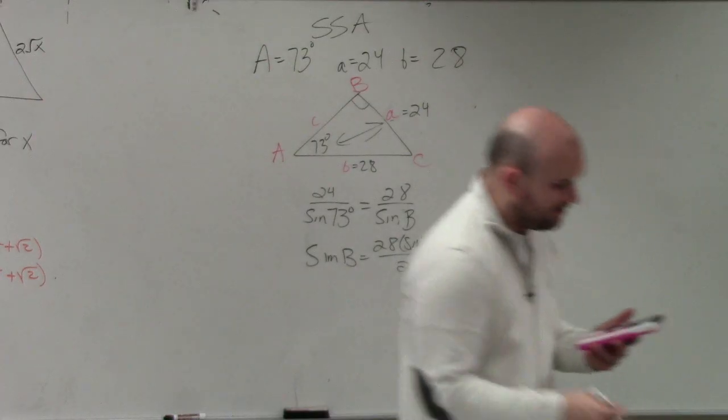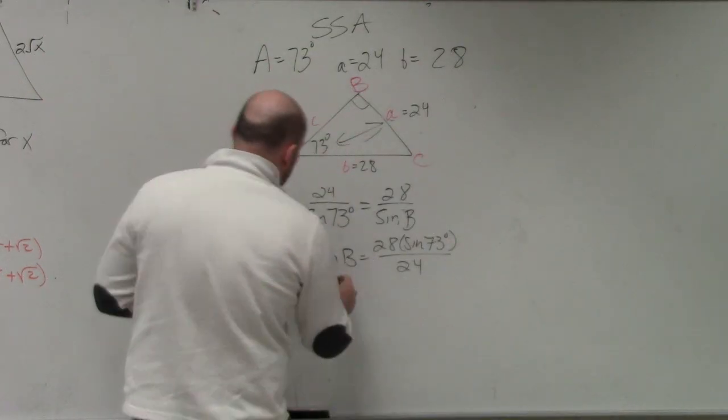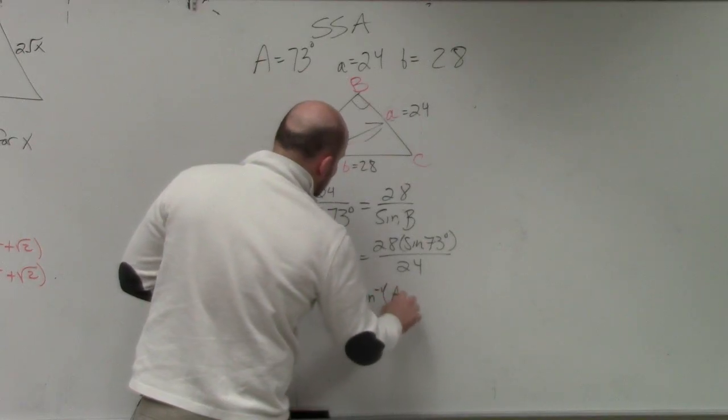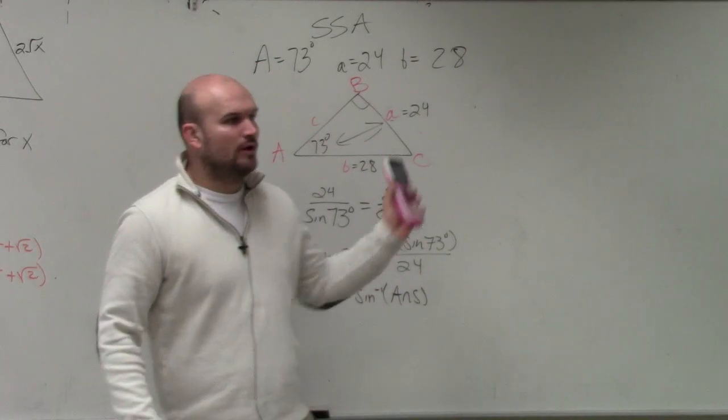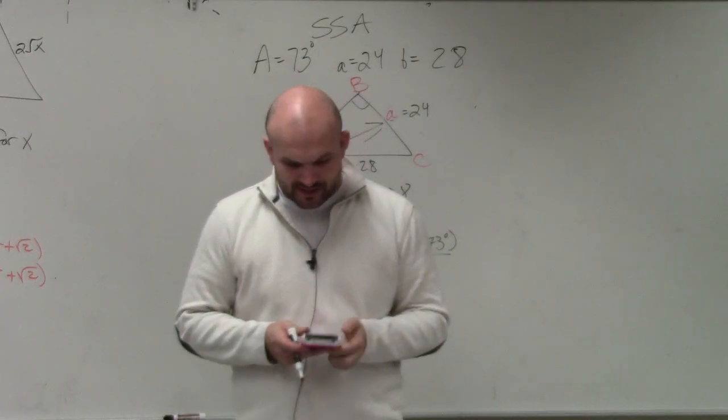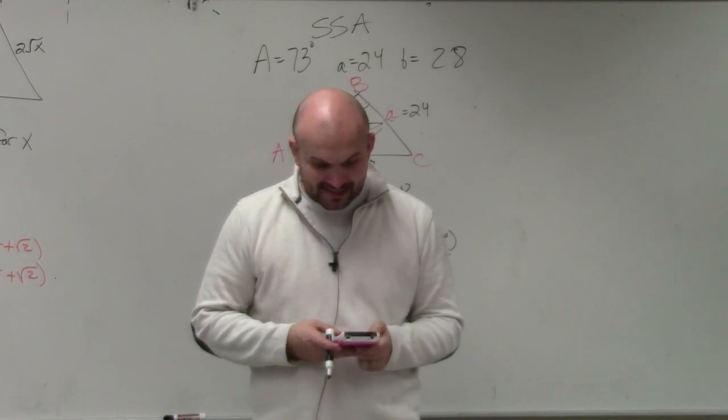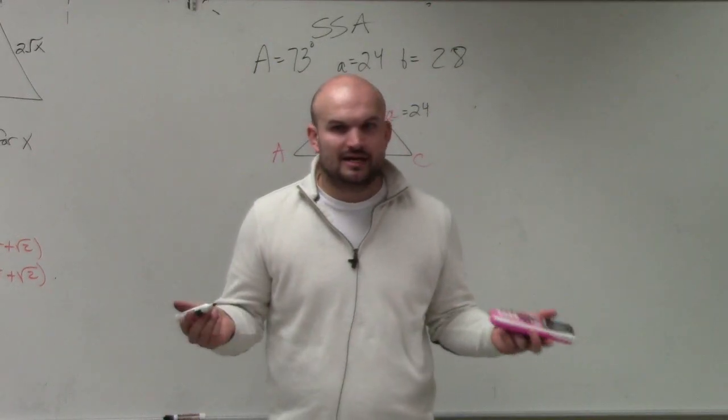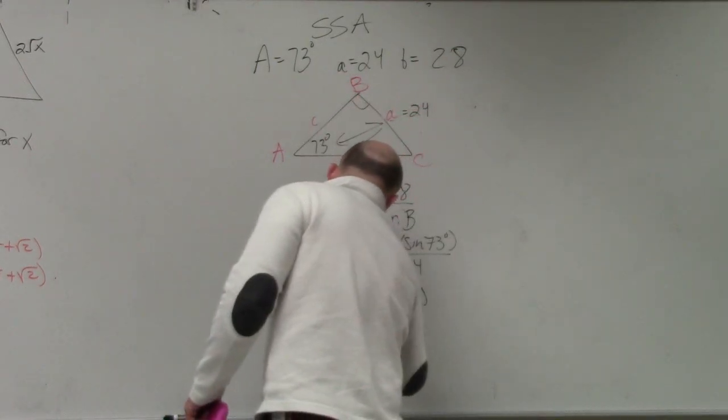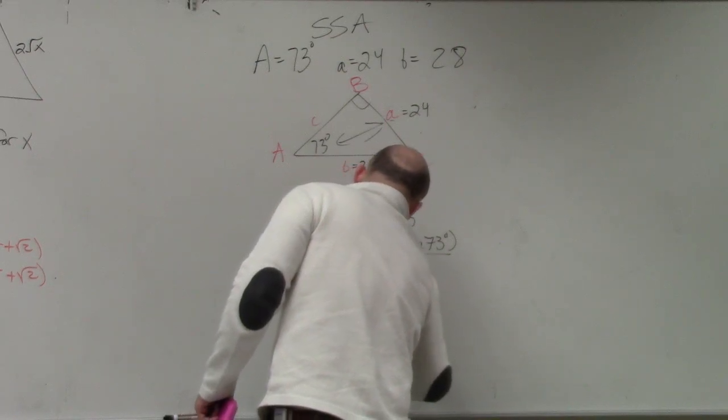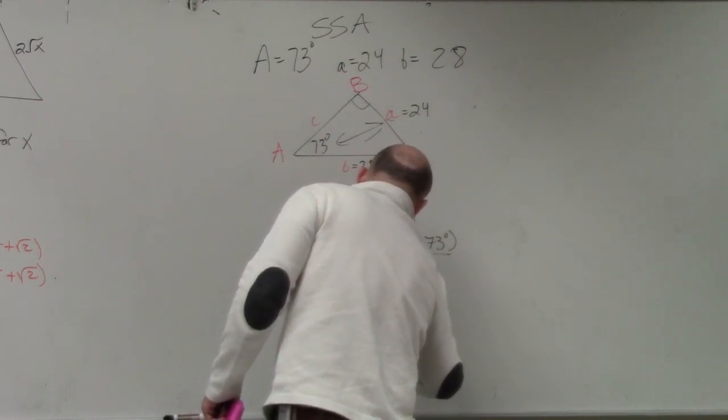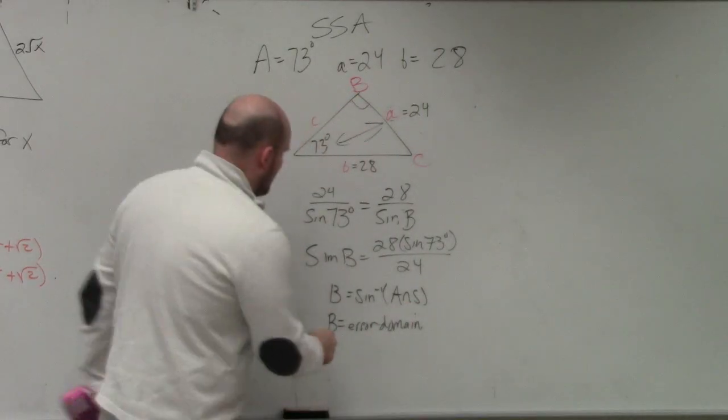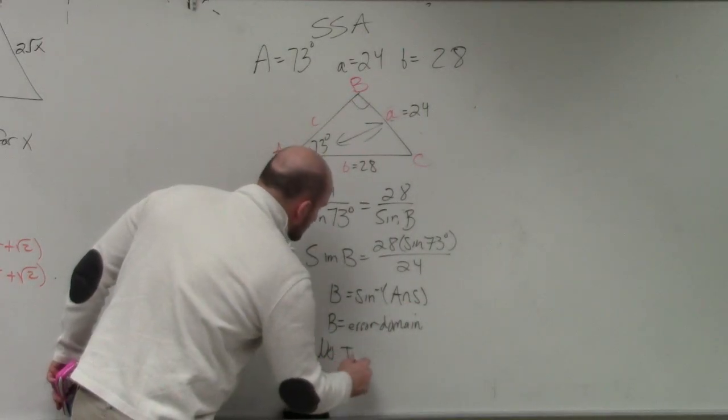Now that gives me 1.115. So to find B, I do the sine inverse of my answer. And my answer is 1.11, right? So when I try to do that, sine inverse of my answer, I get error domain. I can't create a triangle. Error domain.